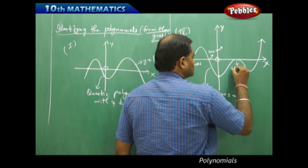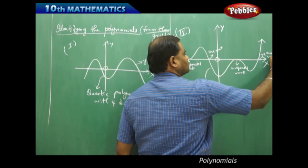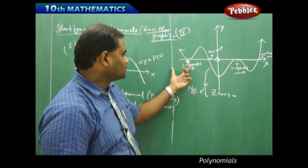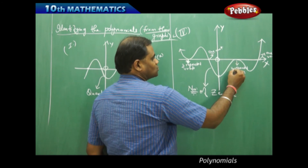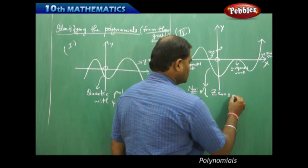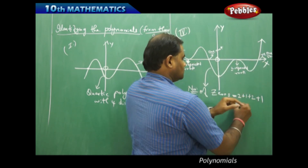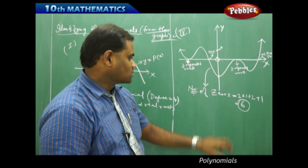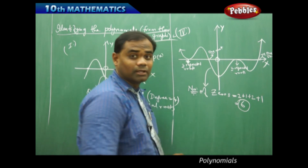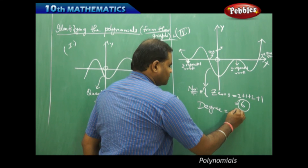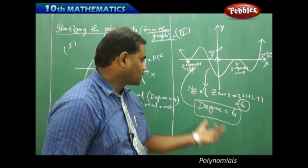Here it touches again giving two repeated roots, and here it cuts giving one root. Counting all roots: two repeated roots plus one plus two plus one equals six. Therefore, the total number of zeros of this polynomial is six, and since the degree equals the number of zeros, this is a polynomial of degree six.